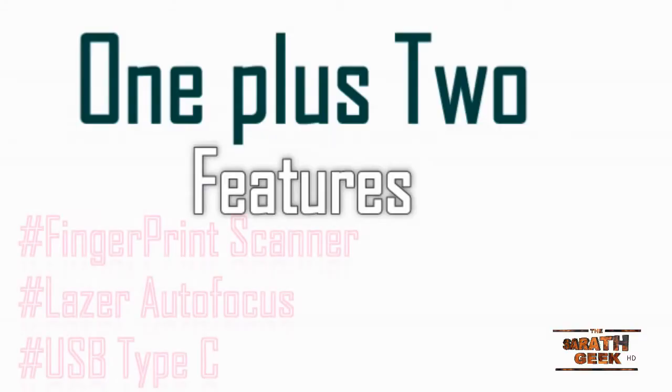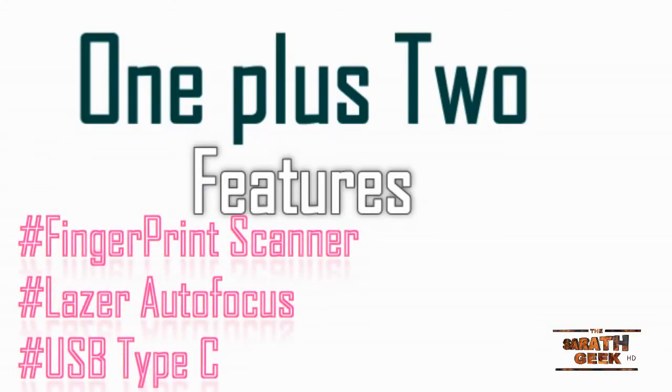New features have been introduced on the OnePlus 2: laser autofocusing, as well as a USB Type-C port, which makes your phone future proof. Also, the OnePlus 2 has a fingerprint scanner — a new thing in the market, as the fingerprint scanner market is becoming increasingly competitive. The OnePlus 1 does lack all of these features.